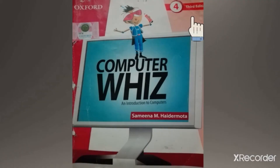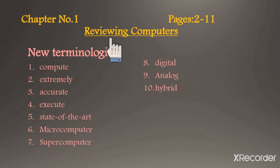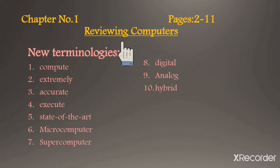Dear students, you have to open page number 2. On page number 2 there is Chapter number 1, and the name of Chapter 1 is 'Reviewing Computers'. Topic name is 'Reviewing Computers', which means computers ka jaiza lena, computers ka review karna.